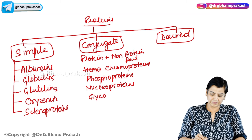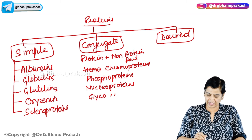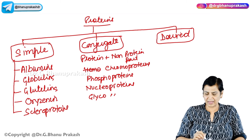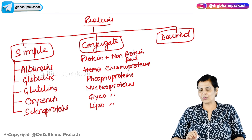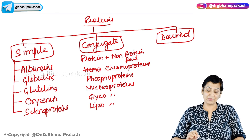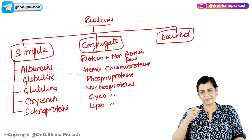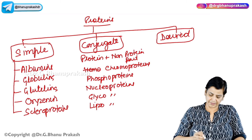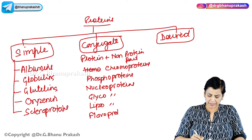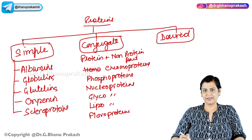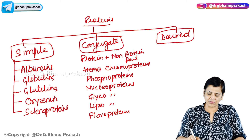Glycoproteins have a non-protein part — carbohydrate — attached to the protein. Lipoproteins are also a very important class; we study them both in proteins and in lipids because they are composed of lipid plus protein. Flavoproteins are also included. All these come under conjugate proteins.